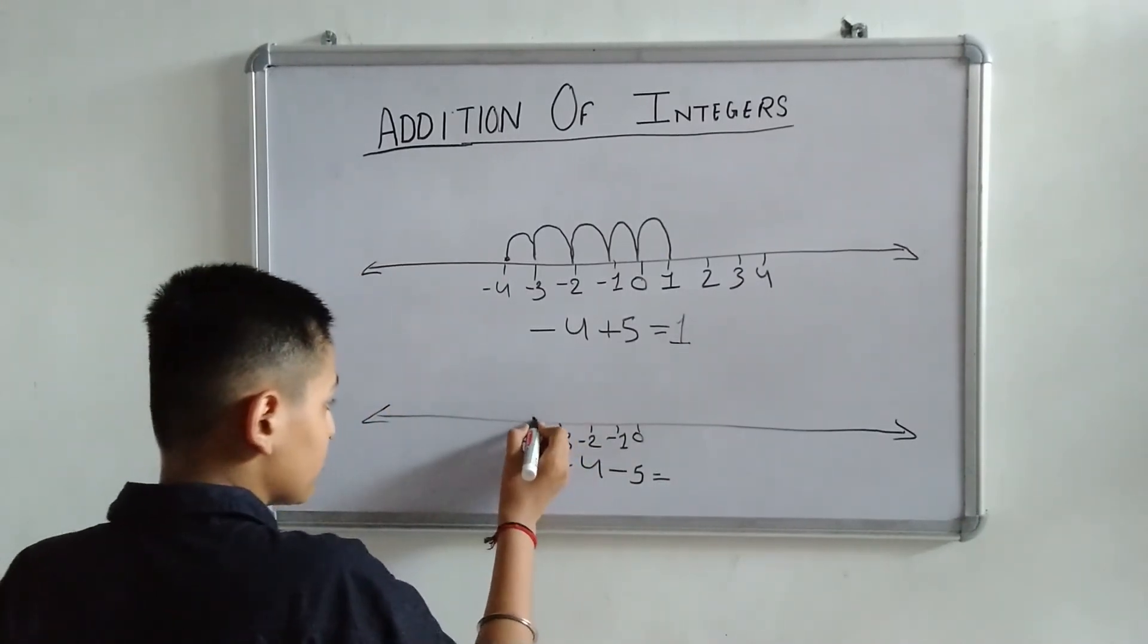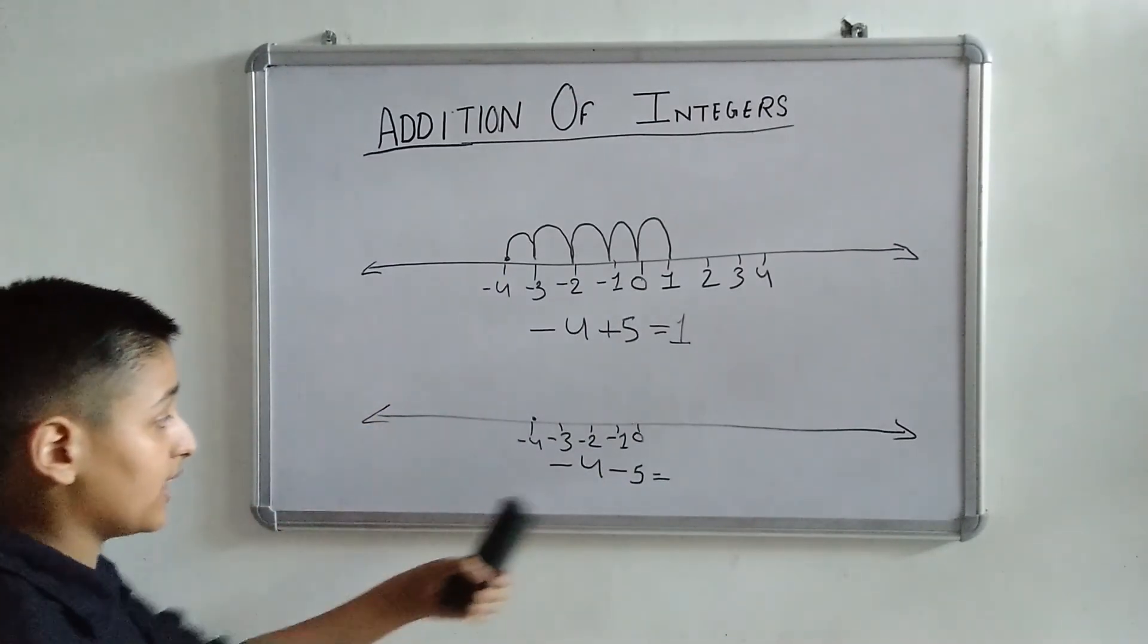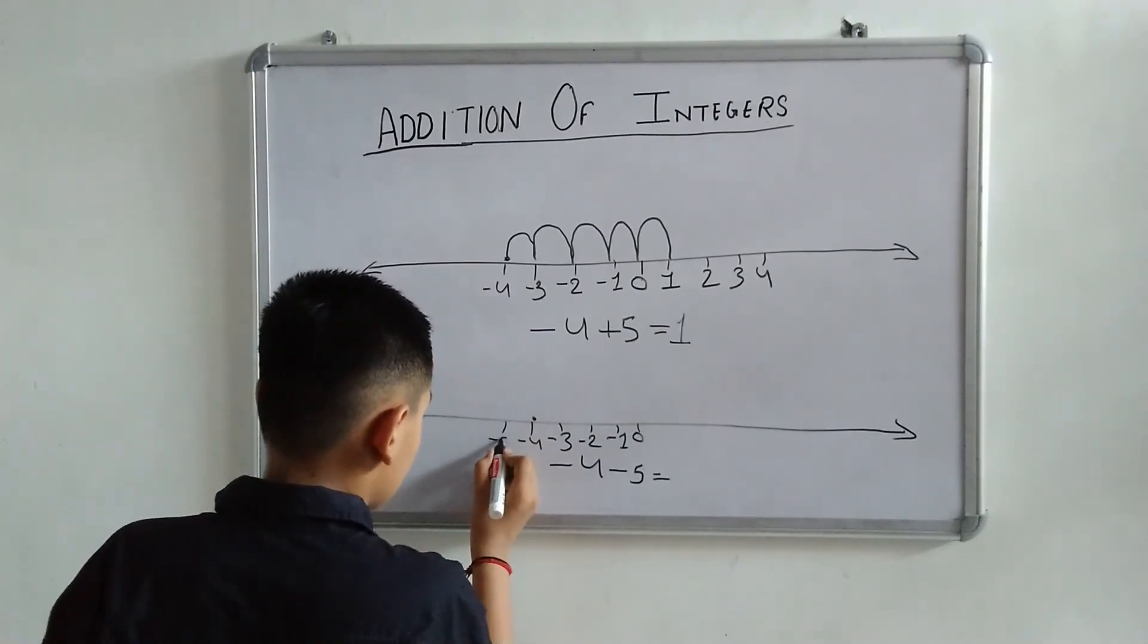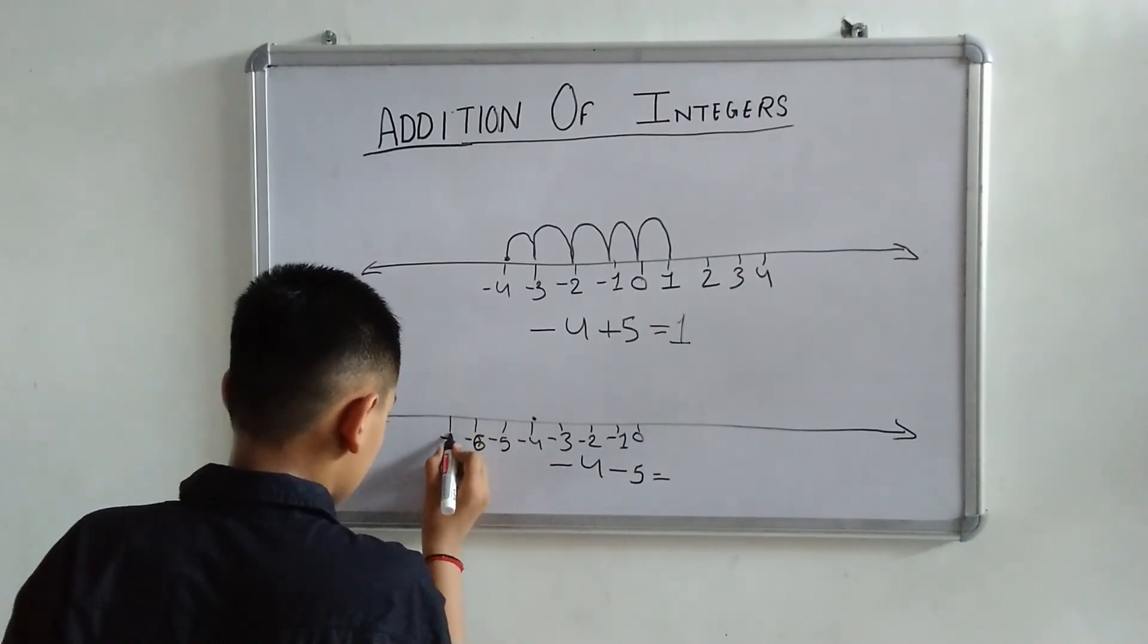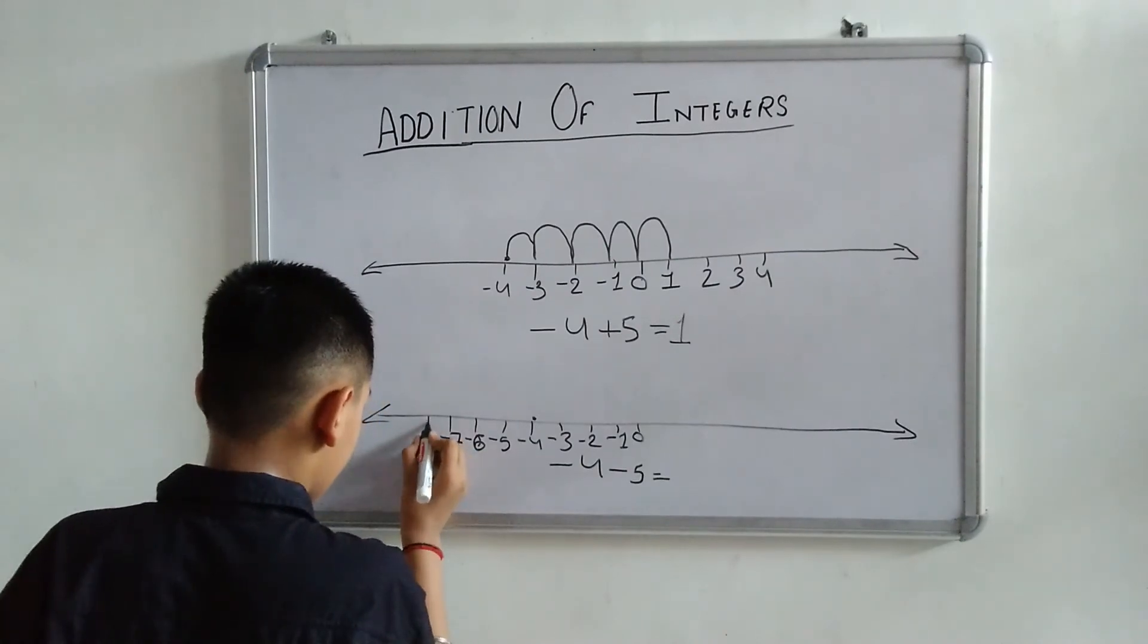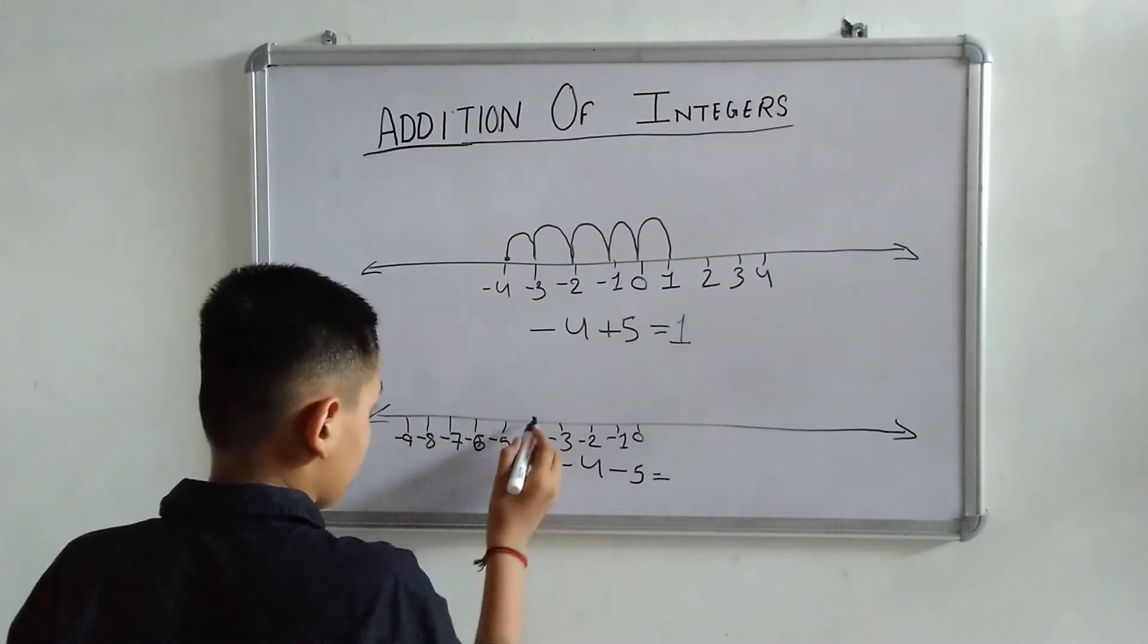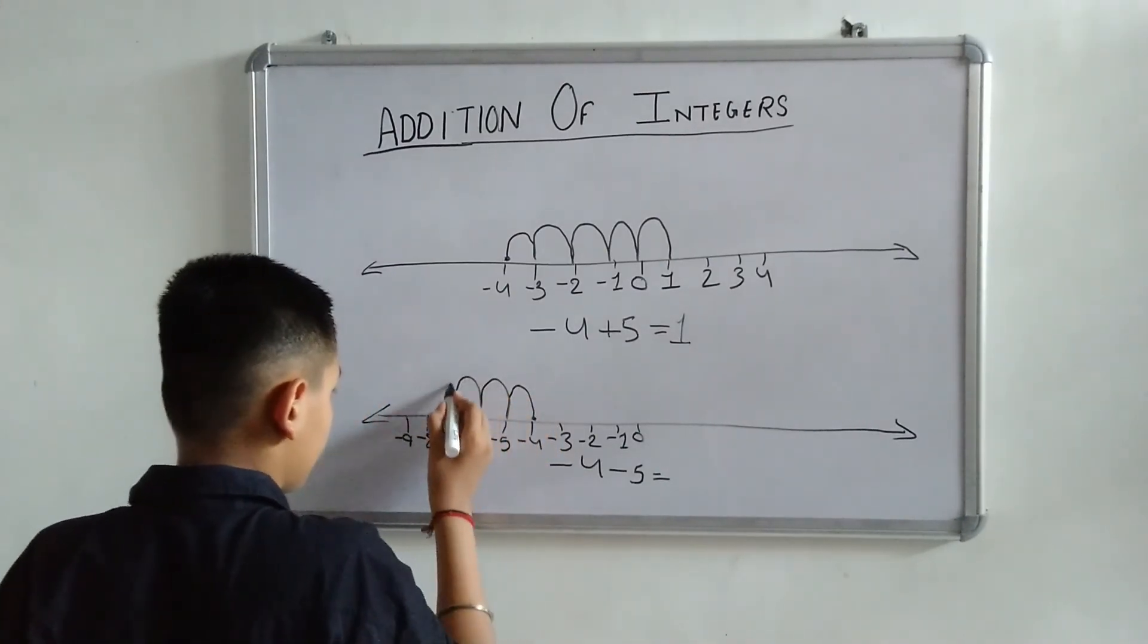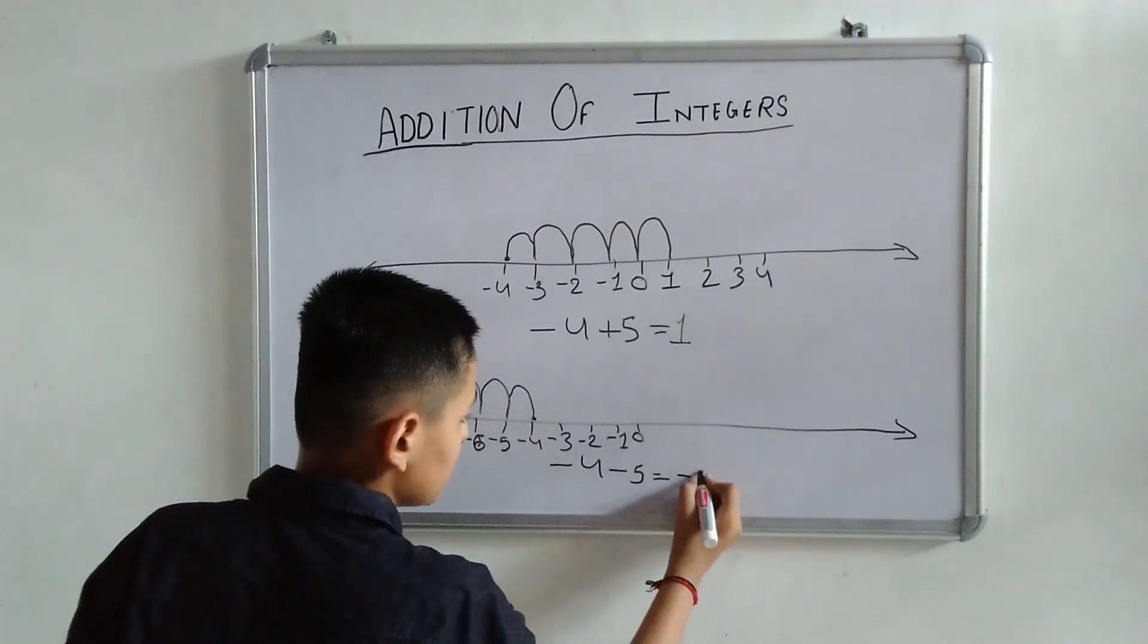Our point is minus 4. And it said, come in left-hand side to steps minus 5: minus 1, 2, 3, 4, 5. The answer will be minus 9.